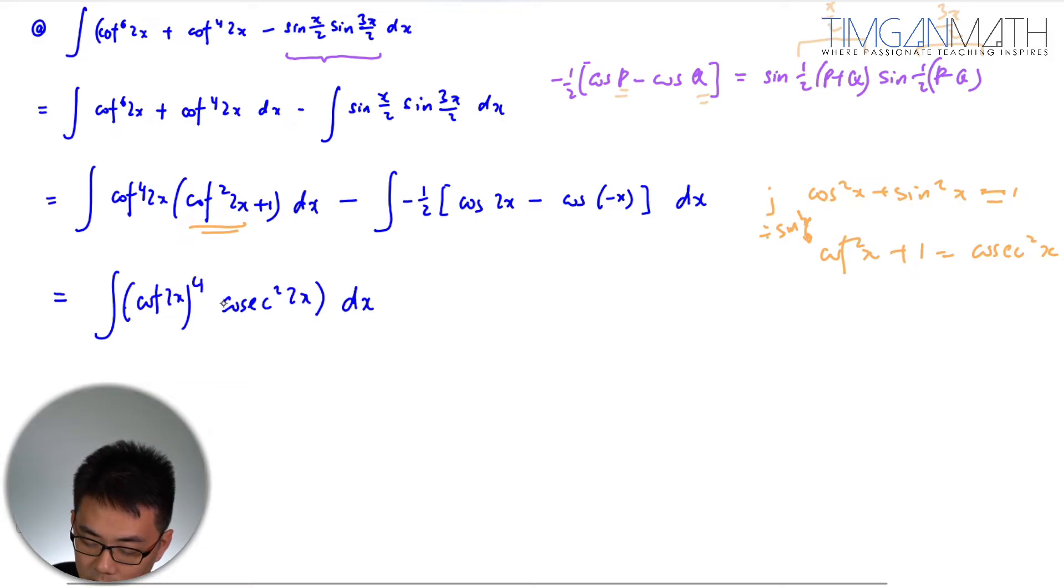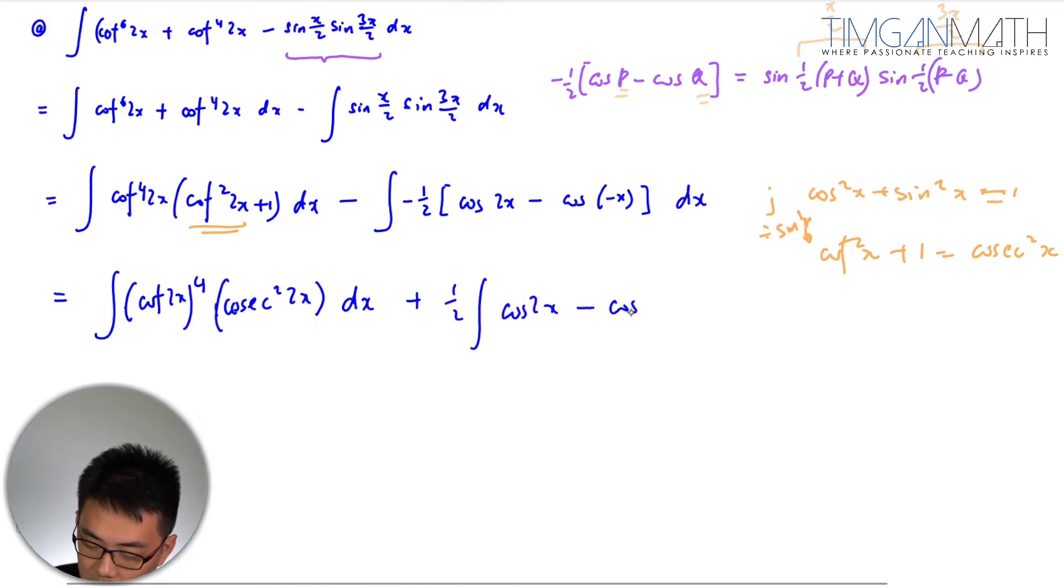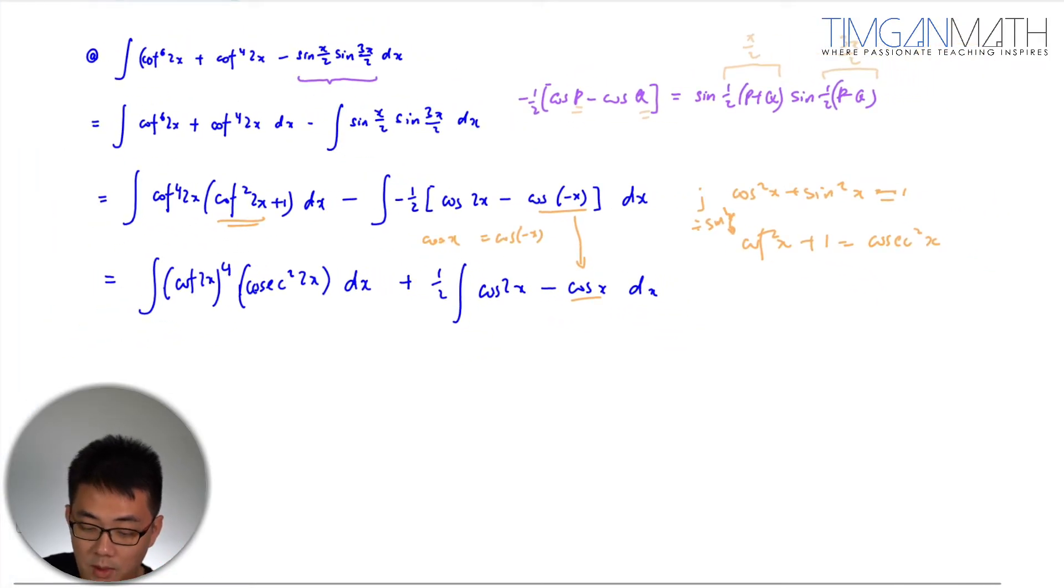You can use f prime fx method so this is cot 2x about 4. Then after which this will just be plus half cosine 2x then this will be minus cosine x. Cosine negative x is positive x right, just remember that.